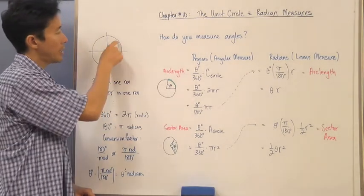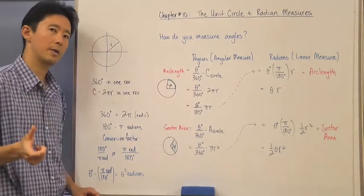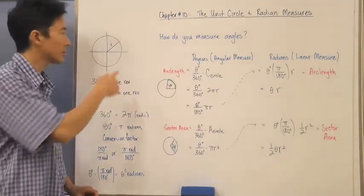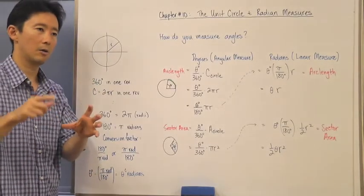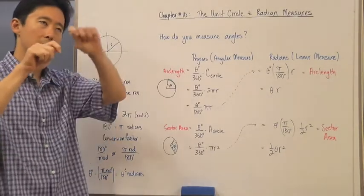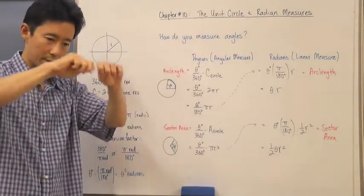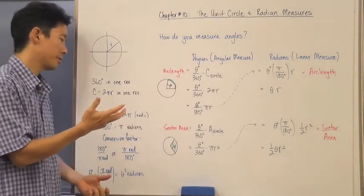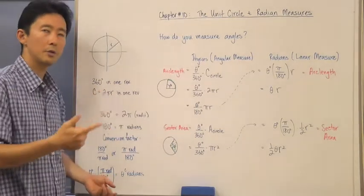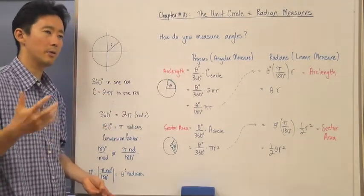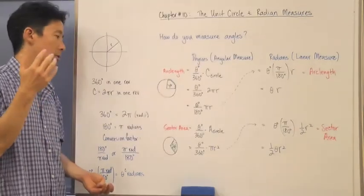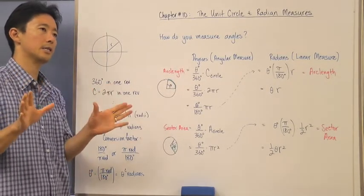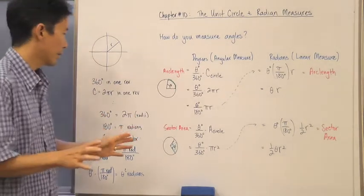What this says — and instead of saying two pi let's say 6.28 — is that if you take one radius and you take 6.28 of those radii and place them upon the circumference of the circle, that's how long one revolution is going to be if you were to stretch it out like a piece of string and measure it. That's always going to be true, because the circumference is always two pi times the radius. So there are always going to be 6.28 radii in one revolution.